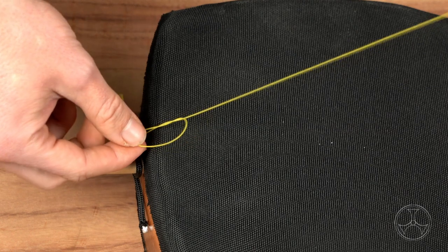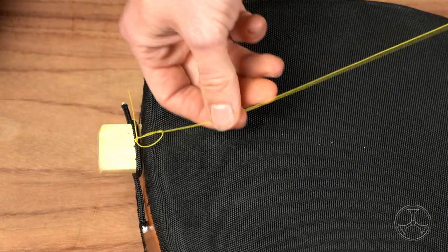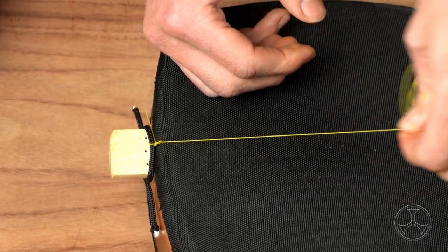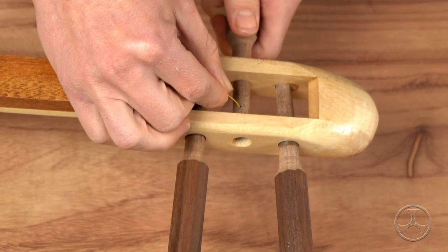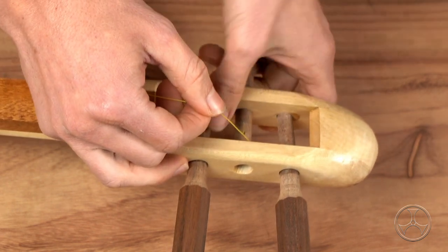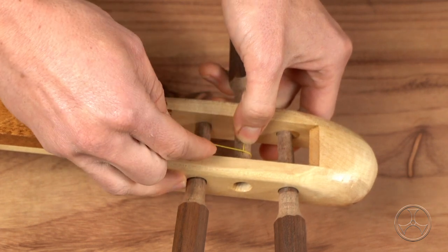And then we'll pull the loose end out. Keep pulling until the loop we made with the slip knot tightens. We'll move over to the tenjin end and feed the string through the hole. Turn the itomaki a bit.